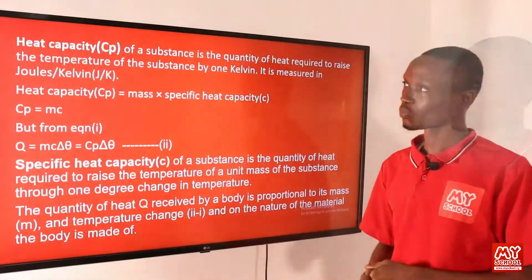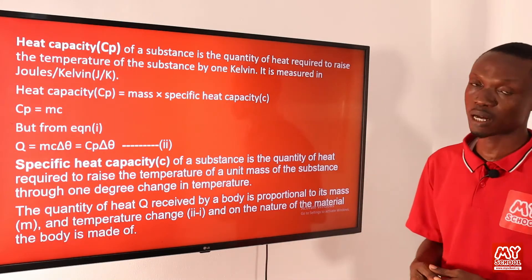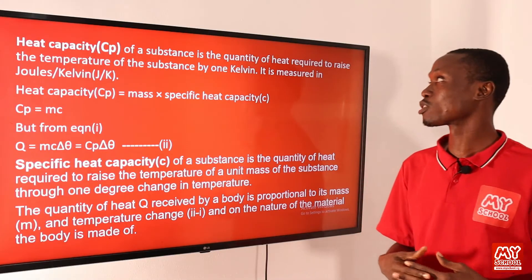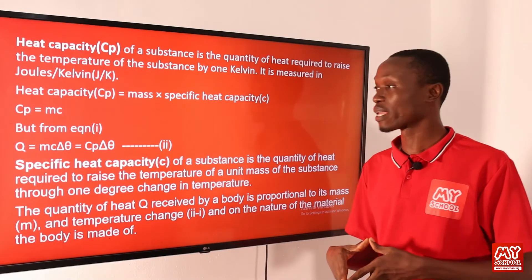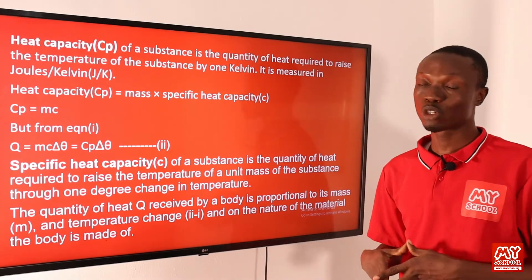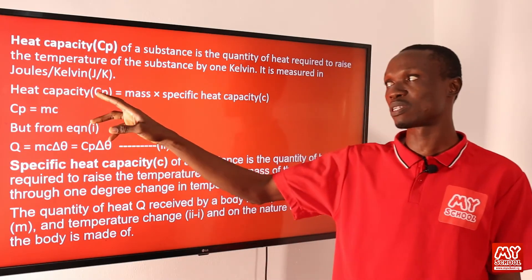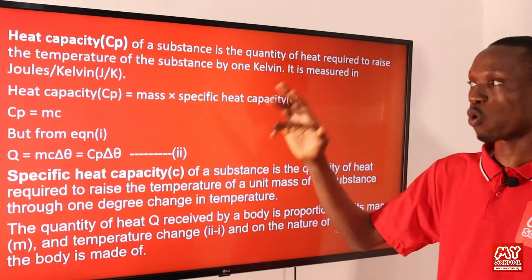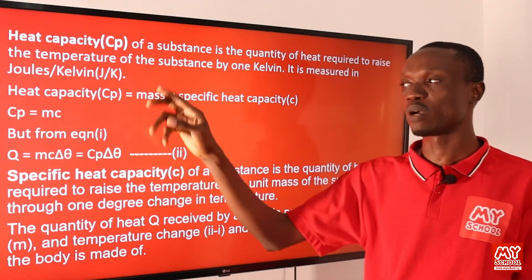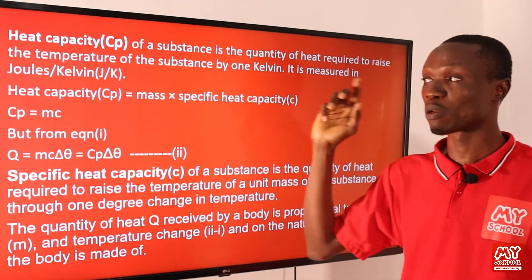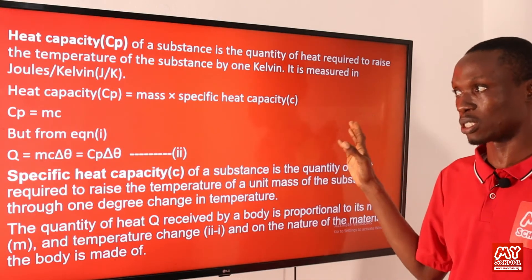Now let's talk about heat capacity. Heat capacity of a substance is defined as the quantity of heat required to raise the temperature of the substance by one kelvin. Heat capacity is measured in joules per kelvin. Mathematically, heat capacity C_p equals mass times specific heat capacity, that is C_p = mc, where m is the mass of the body and c is the specific heat capacity.